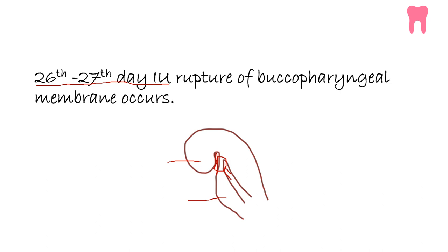The connective tissue underlying the ectoderm of the oral cavity is influenced by the migrated neural crest cells, and that is called as the ecto-mesenchyme. Tooth development is initiated due to the interaction between this ectoderm and the ecto-mesenchyme.